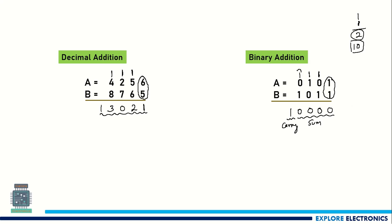To perform this 4-bit addition, we require one full adder for each bit position. So four full adders in total are required to make a 4-bit adder.